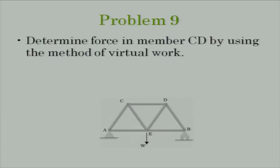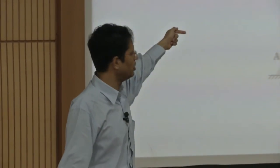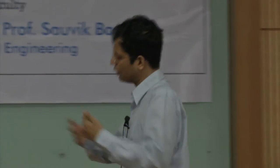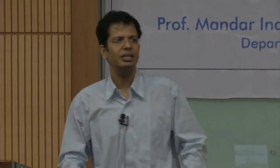No questions? Can we move on? Why don't we do this problem? I did not intend it as a tutorial problem, but this is a bit easier. Use principle of virtual work to find force in the member CD. It will be a good experience. The idea is this: CD is a two-force member. If I assume CD is in tension, then I remove this member CD and at point C I put one force which is pulling, and an equal and opposite force at point D which is pulling. That is an unknown, and I want to find that unknown using principle of virtual work.